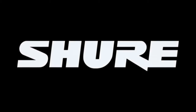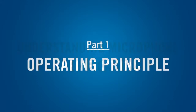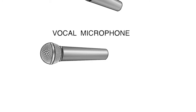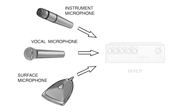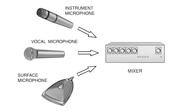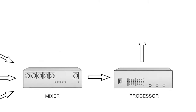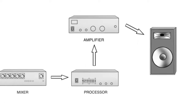A microphone's primary purpose is to convert acoustic energy — sound — into electrical energy: a signal that can be amplified, recorded, or transmitted. Because the microphone is the first link in the audio chain, it's important to choose the right microphone for the job.